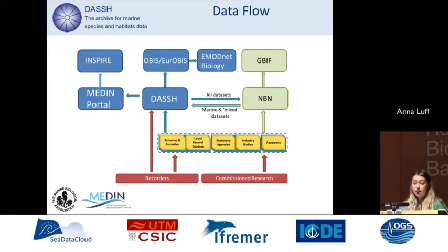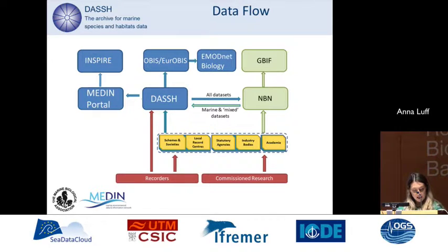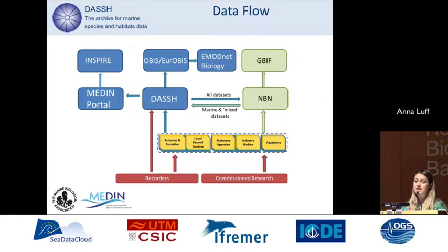We also disseminate discovery metadata through to the Medin portal, which is then made available through to Inspire via data.gov. We also disseminate data in the Darwin Core format to EurOBIS and OBIS, and then to eModNet Biology. Through eModNet Biology, our data can contribute to data products that support the essential biodiversity variables approach, ensuring data dissemination on a European and global scale.